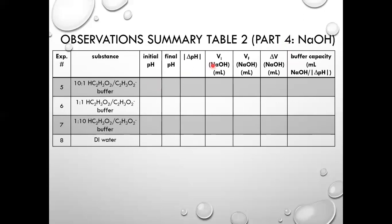Table 2 is for Part 4, where we repeat similar experiments but delivering sodium hydroxide to our buffers. Keep track of the initial pH and final pH, calculate the absolute change in pH. I'll provide the initial and final volume readings of sodium hydroxide in the burette. Calculate the change in volume, then calculate the buffer capacity as the volume of sodium hydroxide added divided by the absolute change in pH experienced.